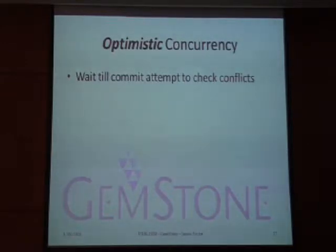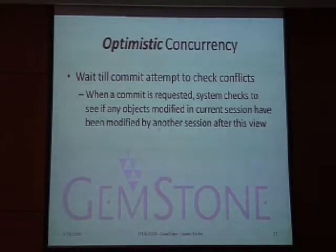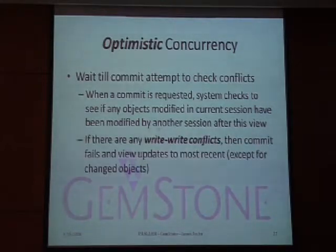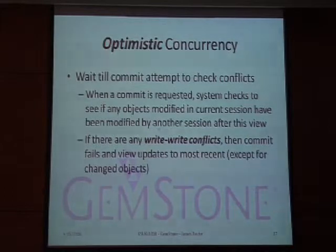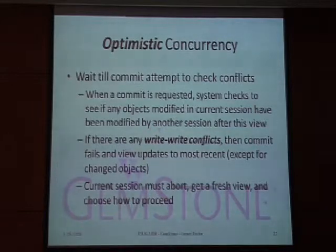Concurrency control is a challenge in any multi-user database environment. GemStone supports both optimistic and pessimistic concurrency. With optimistic concurrency, we wait until the commit is attempted to check for conflicts. If any objects you modified were also modified by another session after your view was obtained, there's a write-write conflict, the commit fails, and the view is updated to the most recent state — except for objects you modified, which you can copy off before doing an abort. Then you do an abort, get a fresh view, and decide how to proceed.